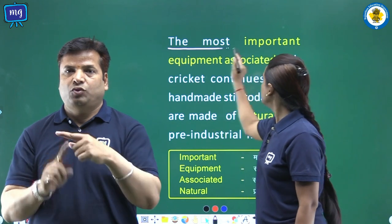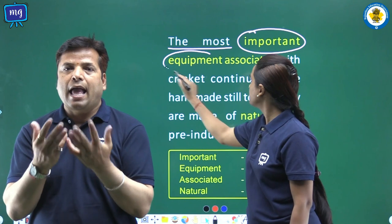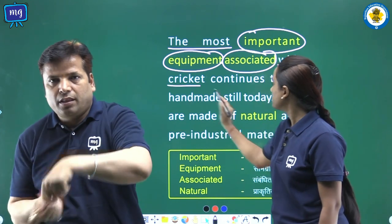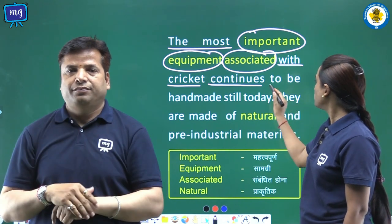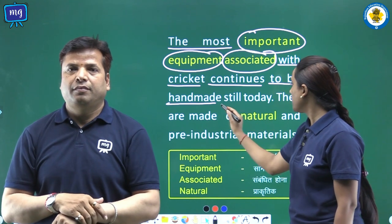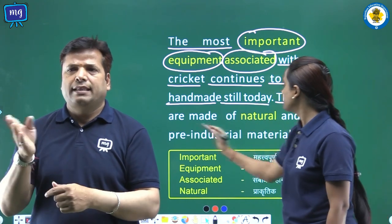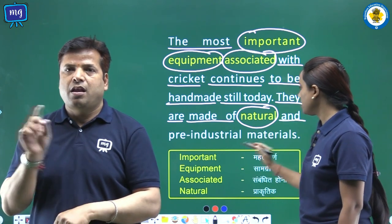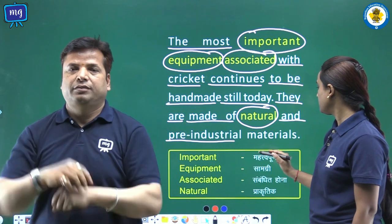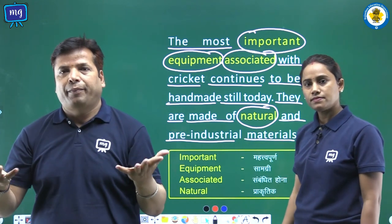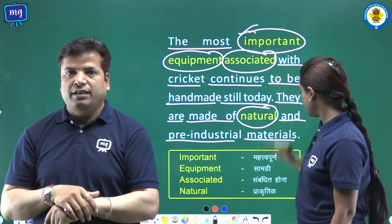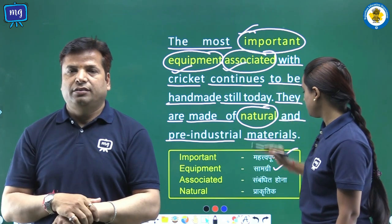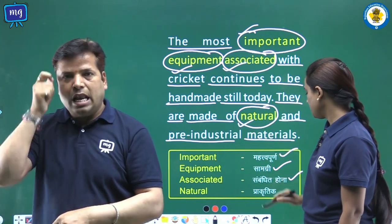The most important equipment associated with cricket continues to be handmade still today. They are made of natural and pre-industrial materials. Word meanings: important — mahatwapurn; equipment — samagri; associated — sambandhit hona; natural — prakritik.